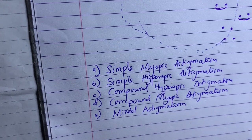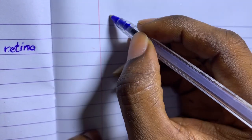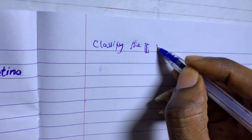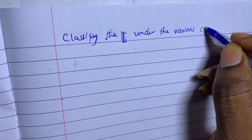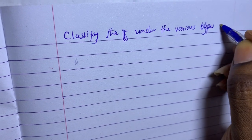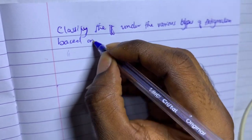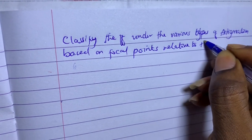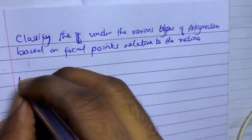You can't just look at a prescription and say 'this is minus so it's myopic, this is plus so it's mixed' — you'll get it wrong. Always draw your optical cross. So let's solve some examples. In an exam, classify the following various types of astigmatism based on focal points relative to the retina.